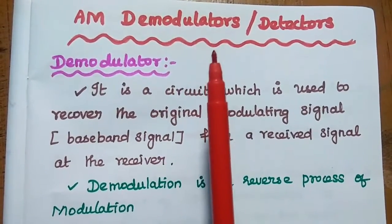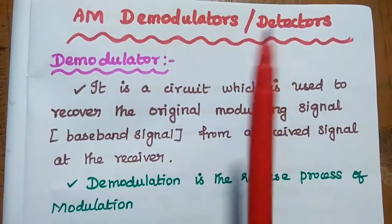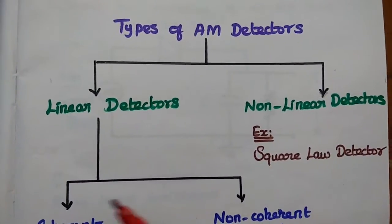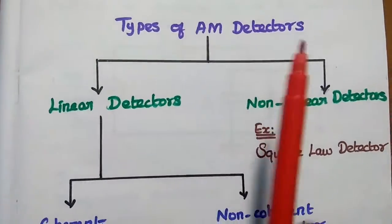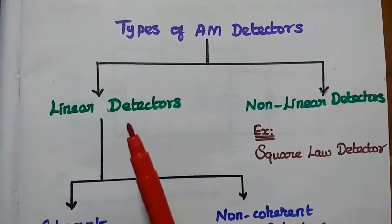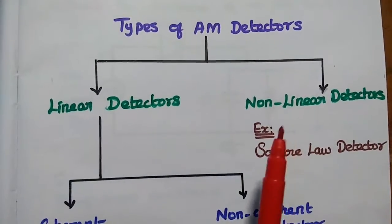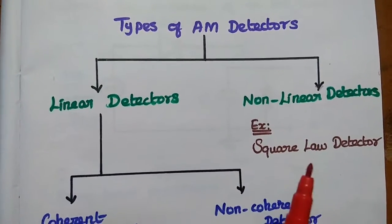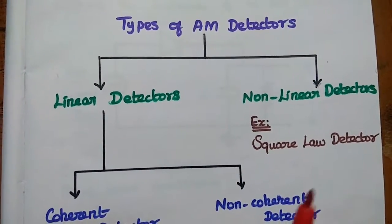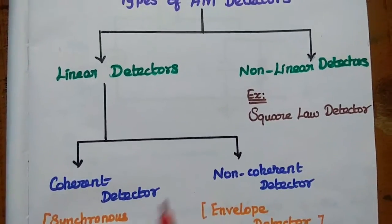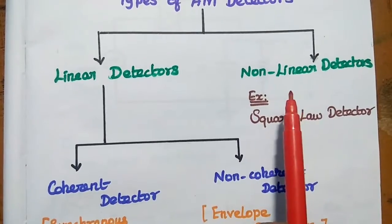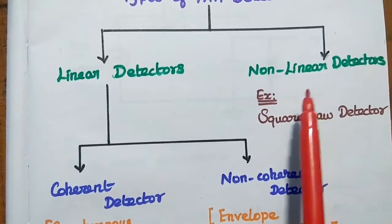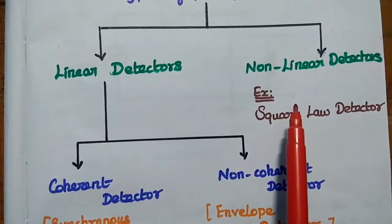AM demodulators are also called as detectors. Types of AM detectors: linear detector and nonlinear detector. The example for this nonlinear detector is the square law detector. Here, we are going to use the nonlinearity property of the semiconductor diodes or transistors.